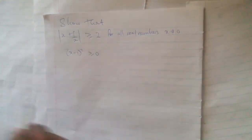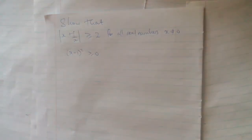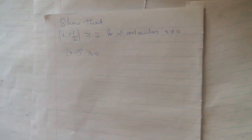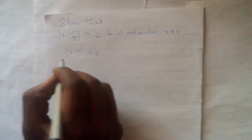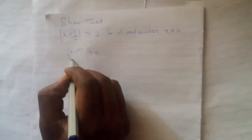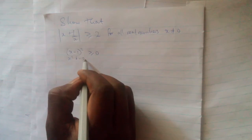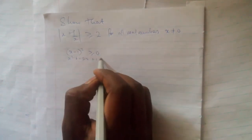We can start from something like (x minus 1) squared is greater than or equal to zero. We know this statement is true for all real numbers, since if we square any number we get something greater than or equal to zero. Expanding this expression, we get x squared minus 2x plus 1 is greater than or equal to zero.